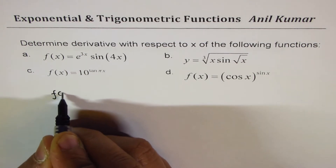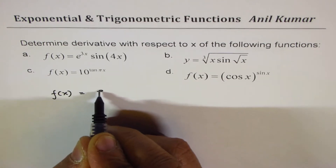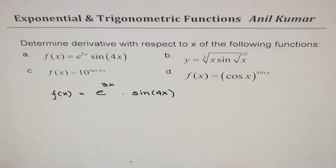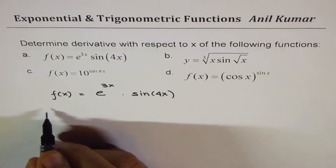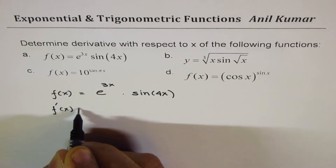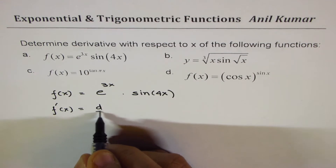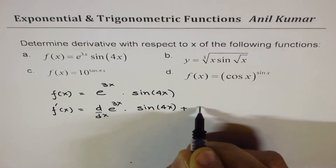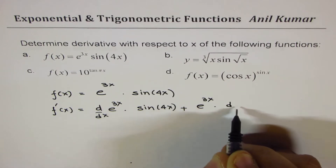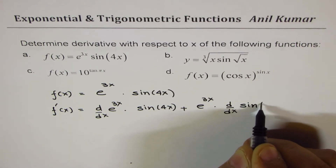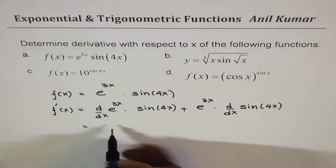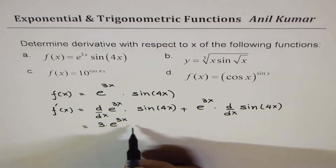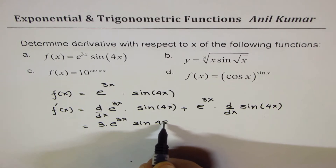Let's do the first one: f(x) equals e to the power of 3x times sine of 4x. We can apply the product rule to find the derivative. So f'(x) equals the derivative of e^(3x) times sine(4x) plus e^(3x) times the derivative of sine(4x). The derivative of e^(3x) is e^(3x) times 3, giving us 3 times sine(4x).